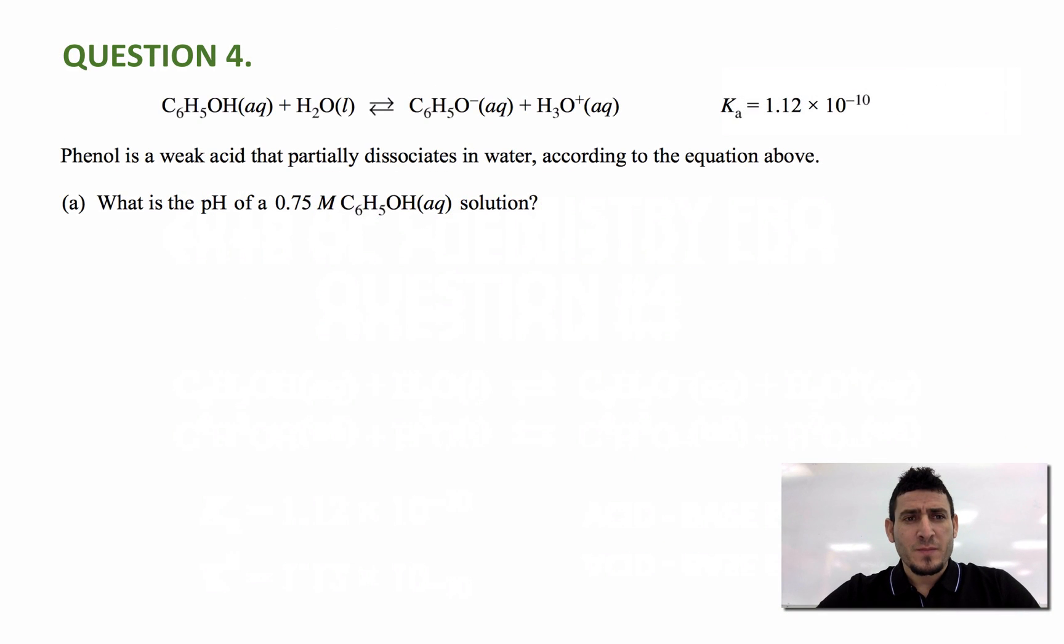The question says phenol is a weak acid that partially dissociates in water according to the equation above. We have phenol plus water gives the phenolate plus hydronium, H3O+. The Ka of this equilibrium is given as 1.12 multiplied by 10 to the power minus 10.